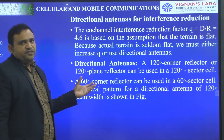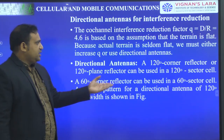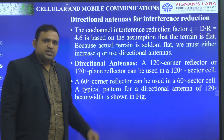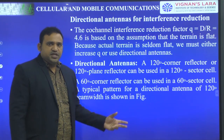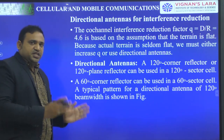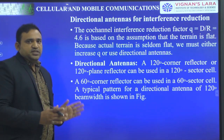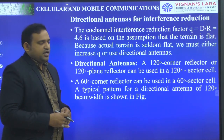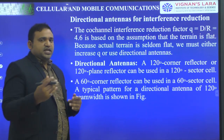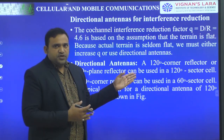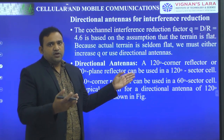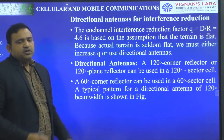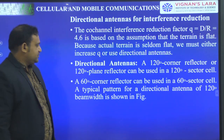1-2-1D corner reflectors are used in 120-degree sector cells. 60-degree reflectors are used in 60-degree sector cells. So for the 6-sector case we use a 60-degree corner reflector antenna, and if it is a 3-sector case, that is a 120-degree, we use 120-degree planar reflector antennas.